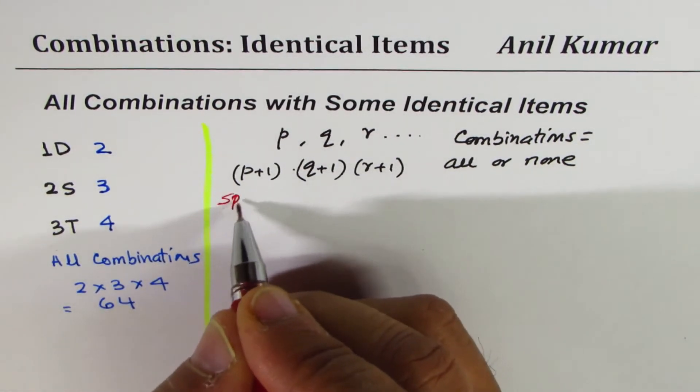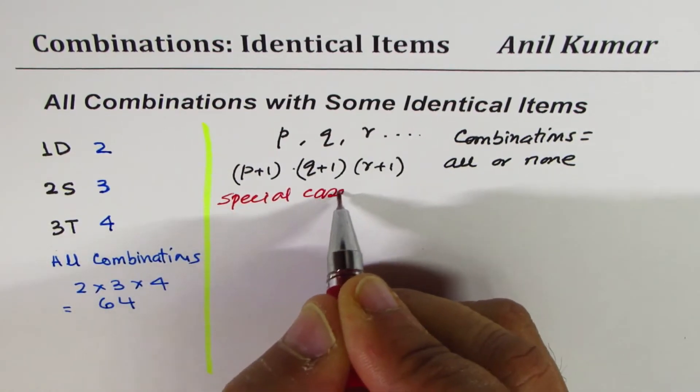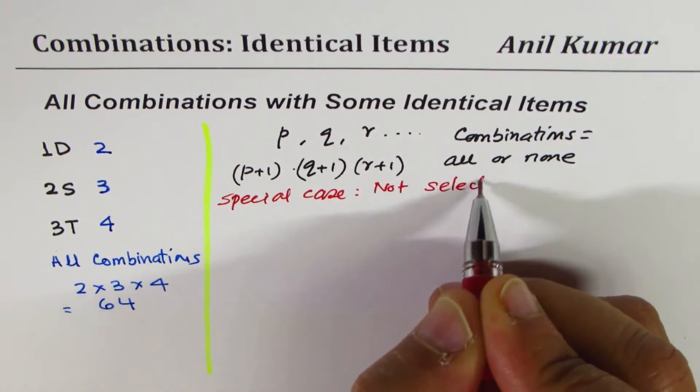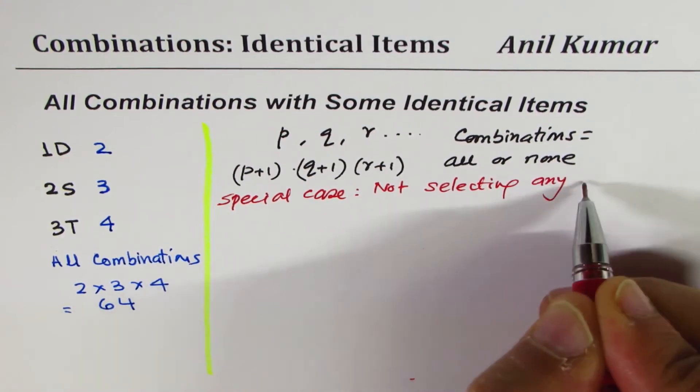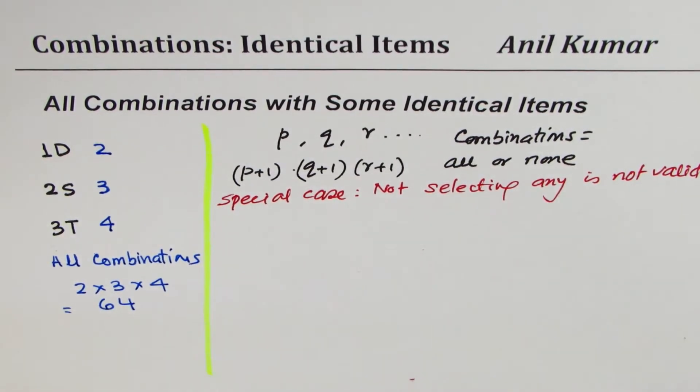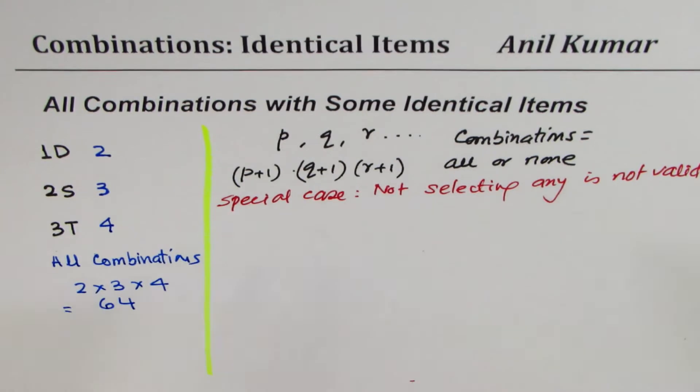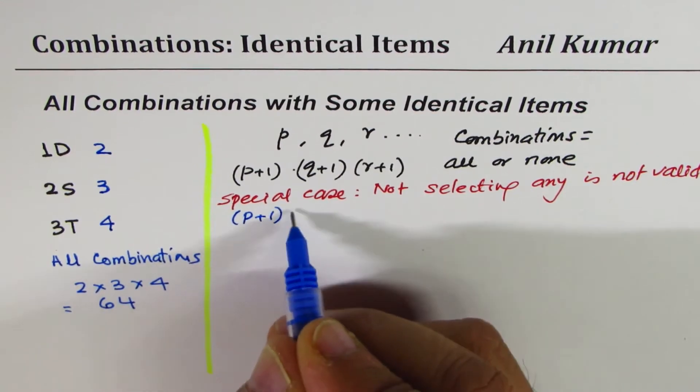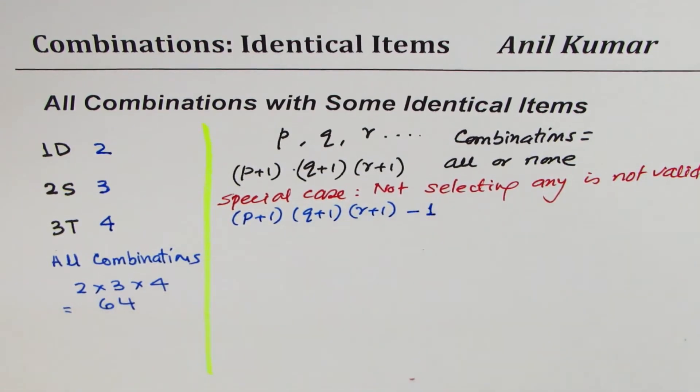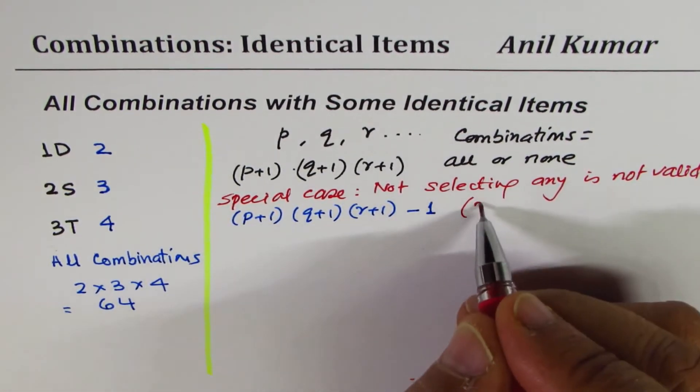Now let's talk about a special case. Special case will be when not selecting any is not a valid choice. For example, if I have to select a committee member I have to select, so there I have no choice. In that case the formula will be modified to p plus one times q plus one times r plus one minus one. This negative one is for not selecting any.